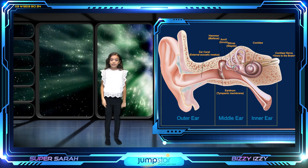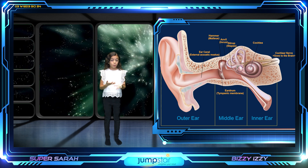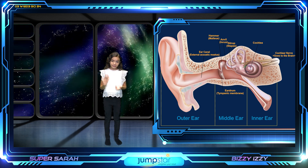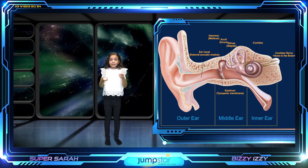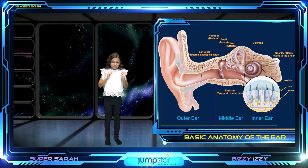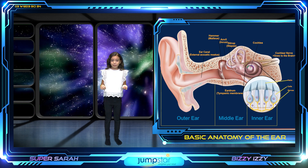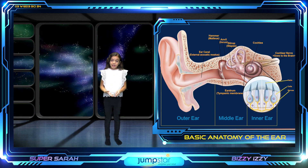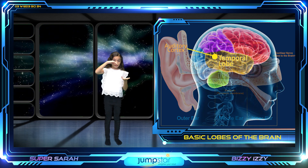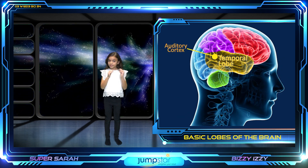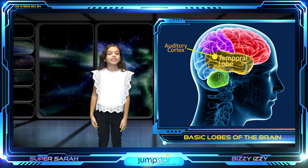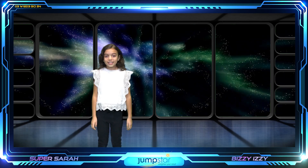Those bones amplify the sound, making it louder. The sound then goes into the cochlea — that snail-shaped part of your ear — and vibrates tiny little hairs. At the base of those hairs are cells that make an electric signal and send it to the temporal lobe in the brain. The auditory cortex processes it, and your body does all of that in a fraction of a second!